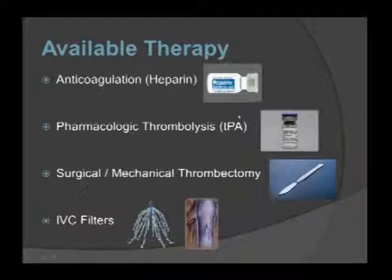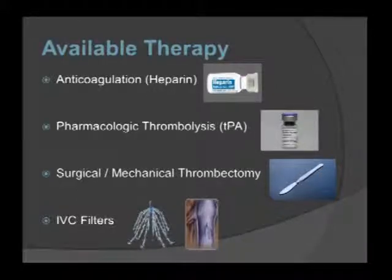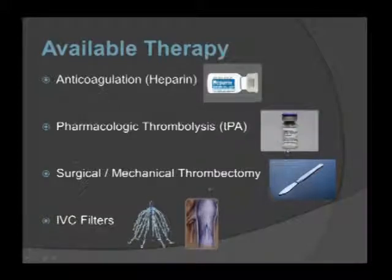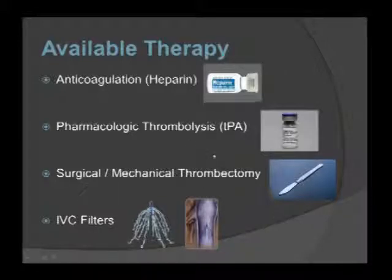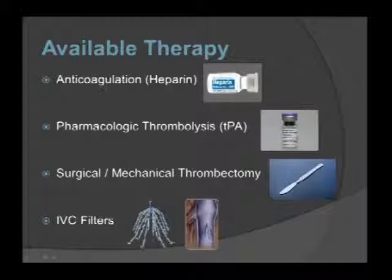Our treatment tools include anticoagulation — lovenox, unfractionated heparin infusion, or fondaparinux — and pharmacological thrombolysis. The classic dose of TPA or alteplase is 100 mg: a 10 mg bolus followed by a 90 mg infusion over two hours. Other agents include streptokinase, anistreplase, reteplase, and urokinase with similar efficacy. Procedurally, we have mechanical thrombectomy — catheter-directed therapy — usually combined with pharmacologic thrombolysis, surgical embolectomy, and IVC filters.